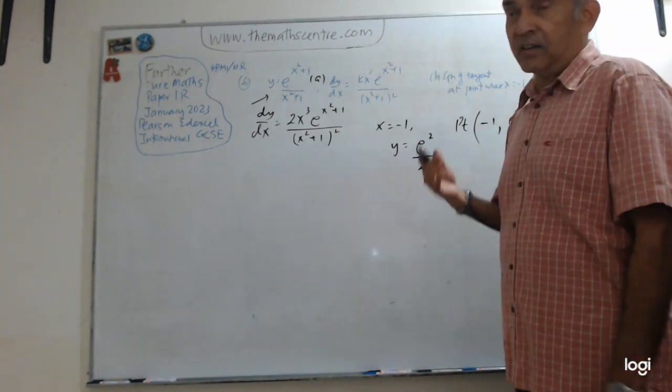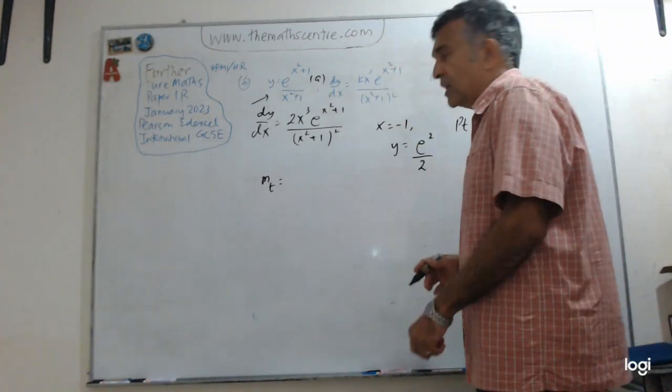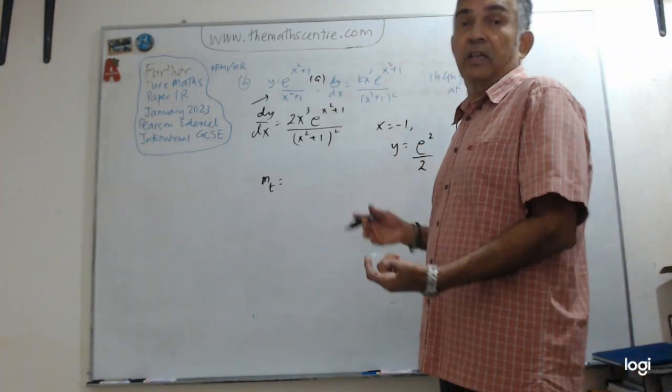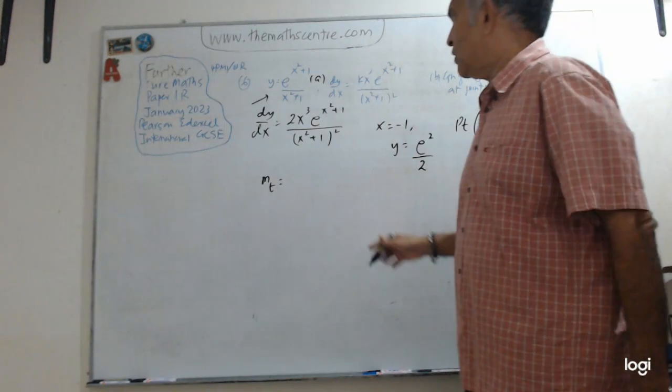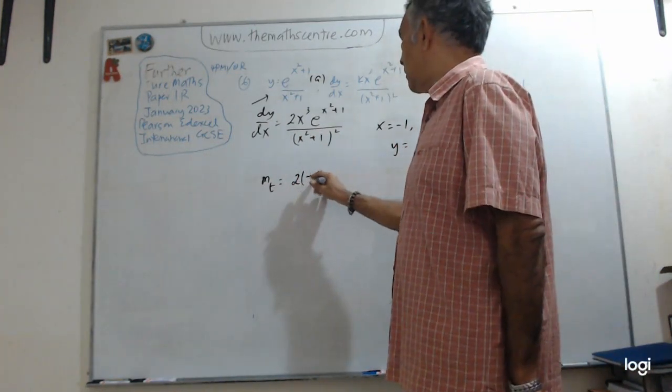So now we need to find the gradient m_t. What is m_t? The gradient of the tangent. How do you get that? Plug in the value of x in dy/dx. So plug in. So I have 2 here. Minus 1 cubed is minus 1.